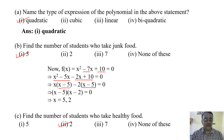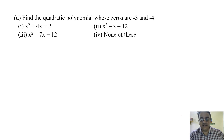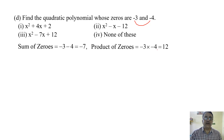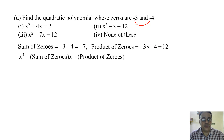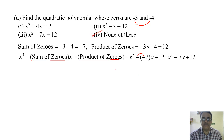Find the quadratic polynomial whose zeros are minus 3 and minus 4. Sum of zeros: minus 3 minus 4 equals minus 7. Product of zeros: minus 3 into minus 4 equals plus 12. Using the formula x squared minus sum of zeros into x plus product of zeros, substituting gives x squared plus 7x plus 12. The answer is not among the options, so it is none of these.